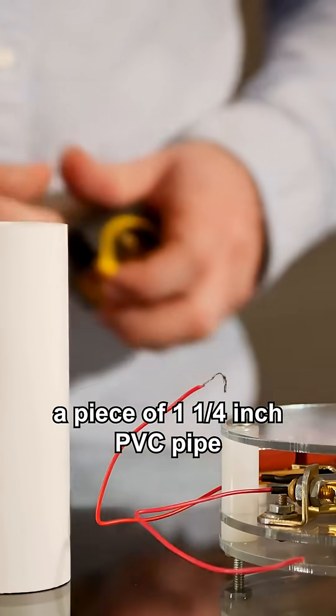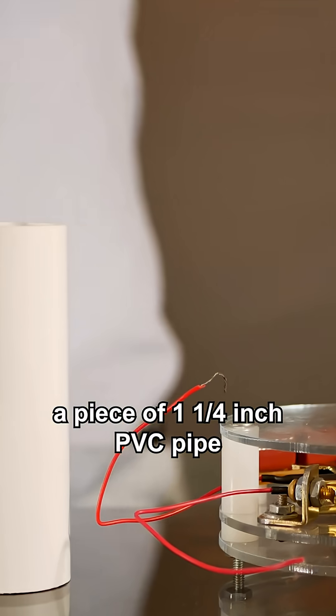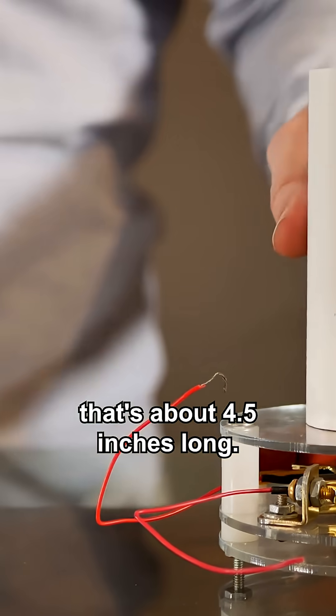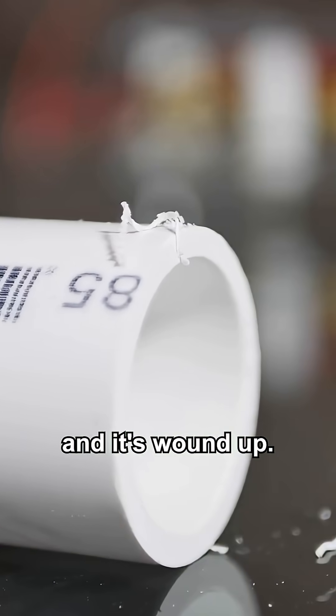As a backbone, the secondary uses a piece of one and a quarter inch PVC pipe that's about four and a half inches long. Then small holes are drilled at either end and it's wound up.